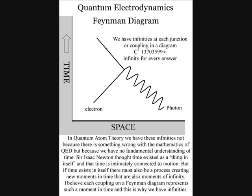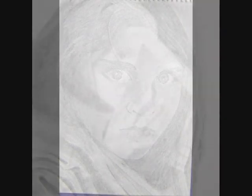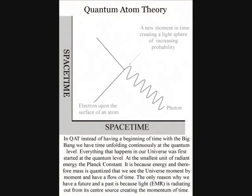Sir Isaac Newton thought time existed as a thing in itself, and that time is connected to motion. But if time exists in itself, there must also be a process creating new moments of time that are also moments of infinity. In quantum atom theory, each coupling on a Feynman diagram represents such a moment in time, and this is why we have the infinities that have to be cancelled out by renormalization.